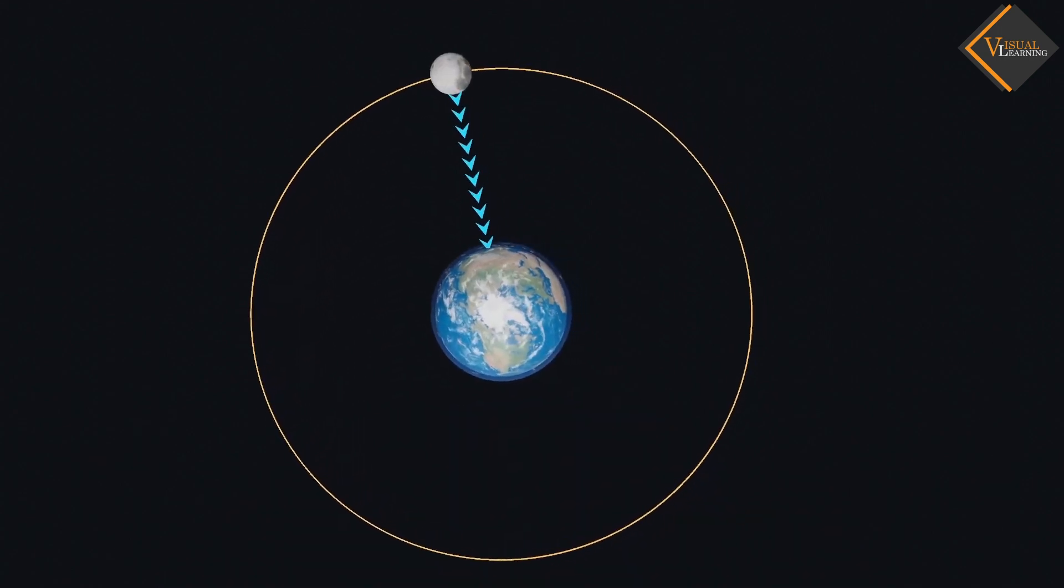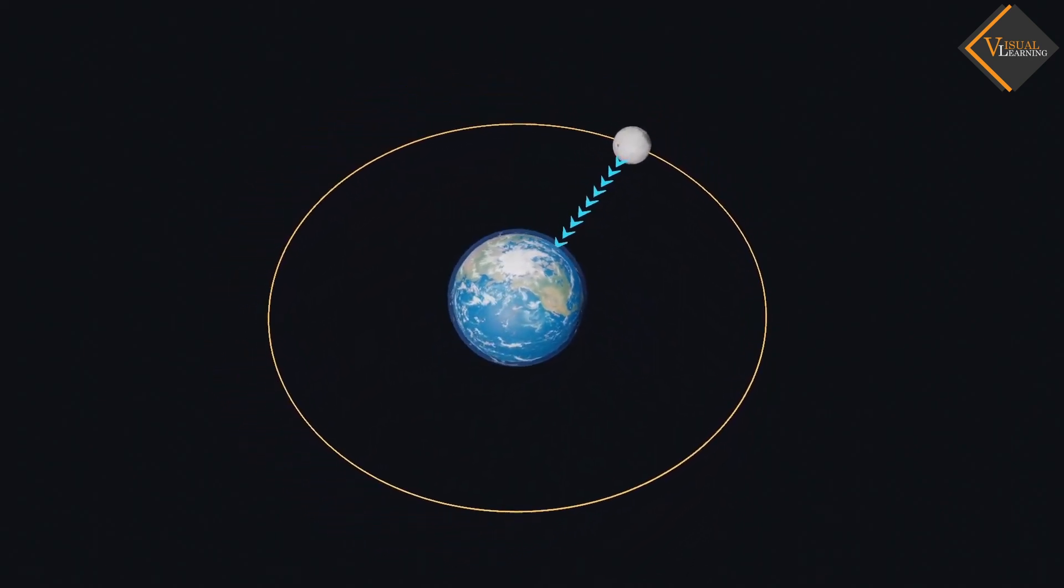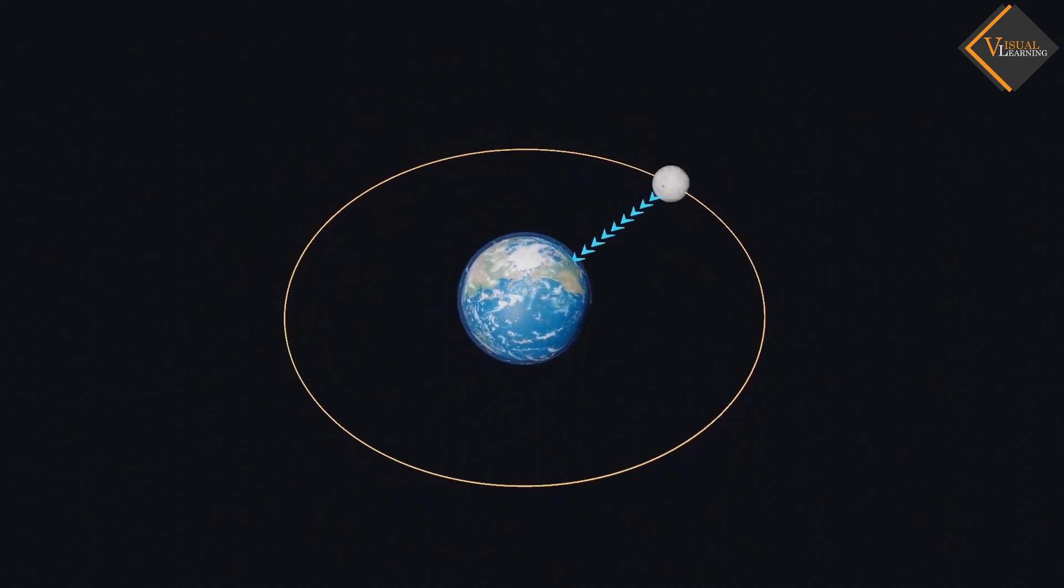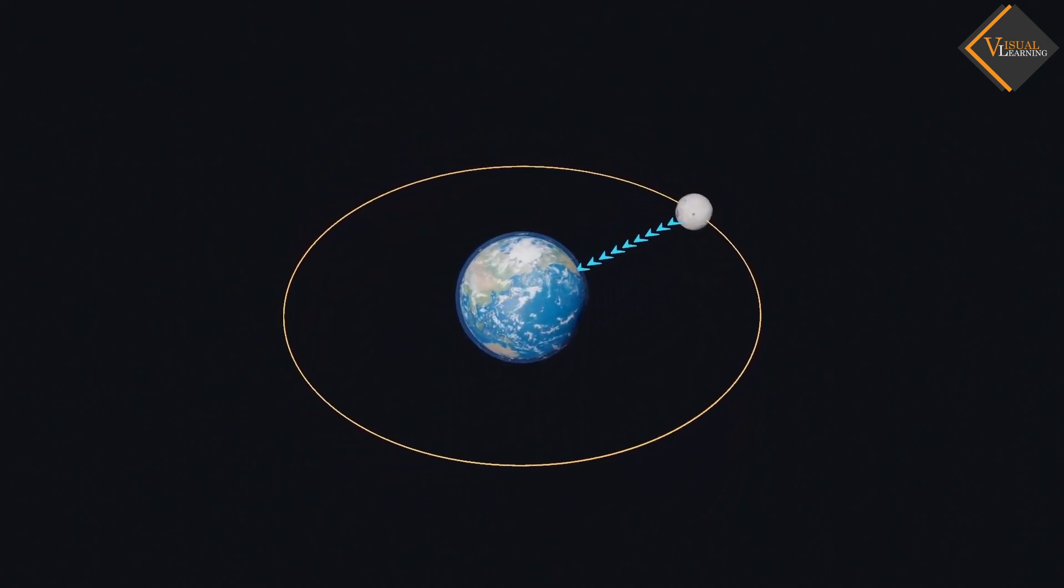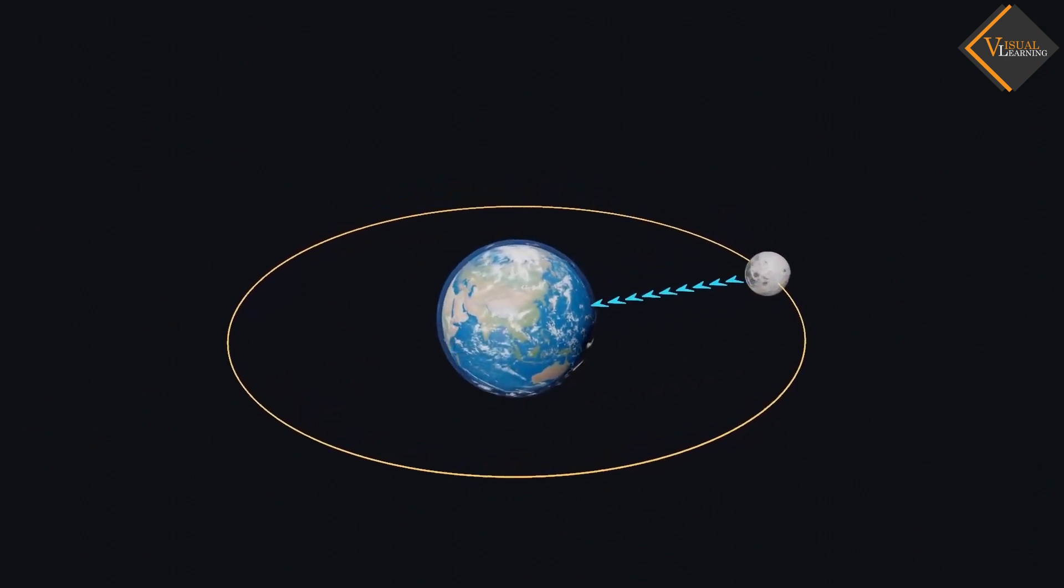And the same force is acting between the moon and the earth. But the moon is revolving around the earth instead of falling towards the earth. Now, let's understand why this happens.